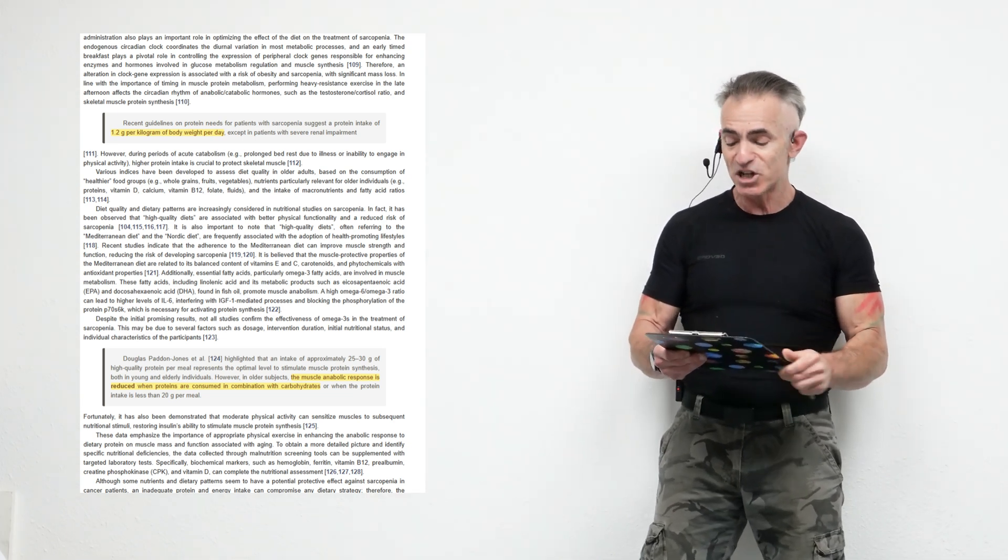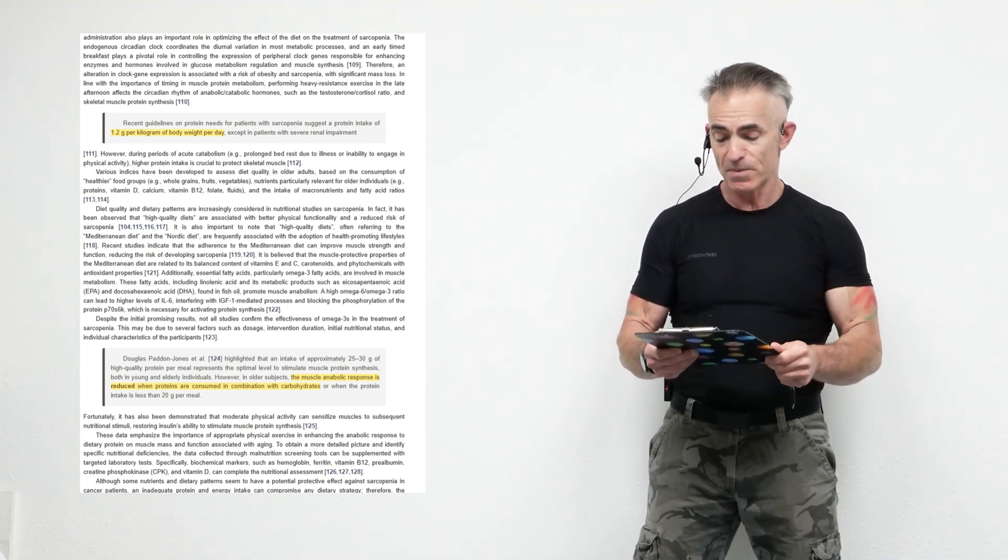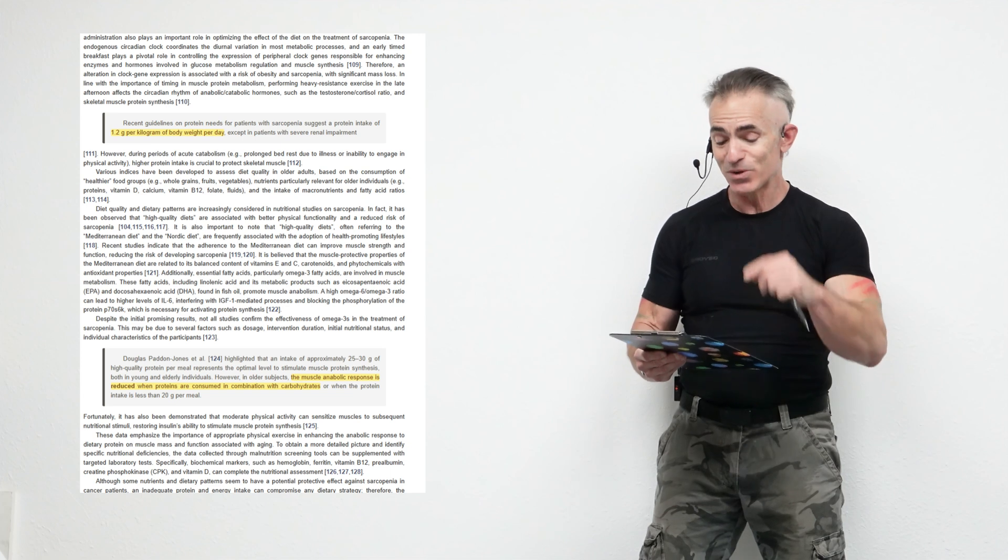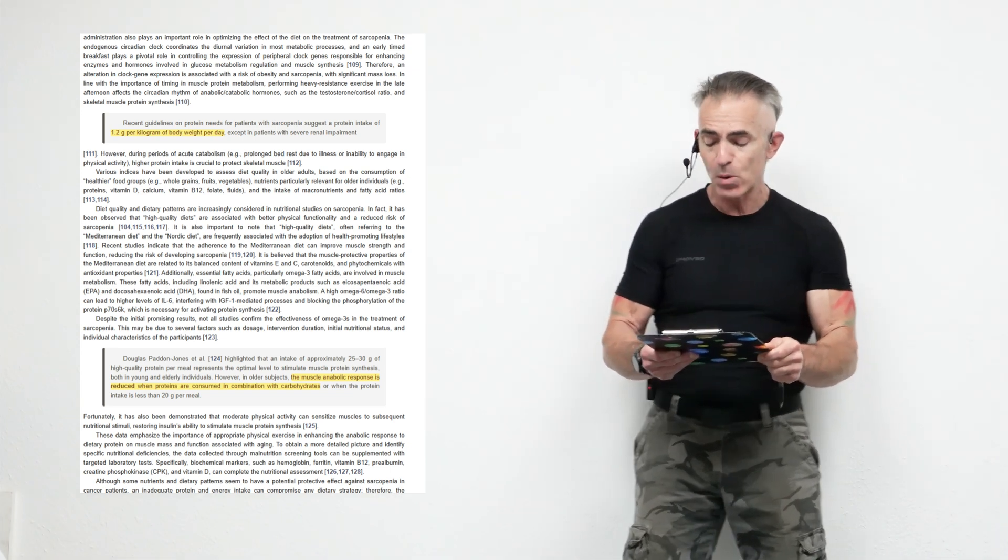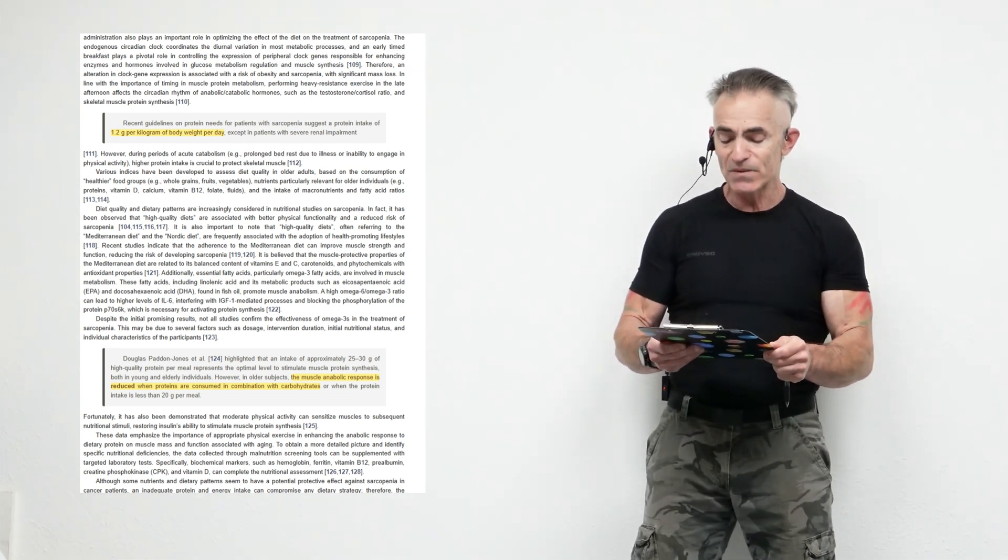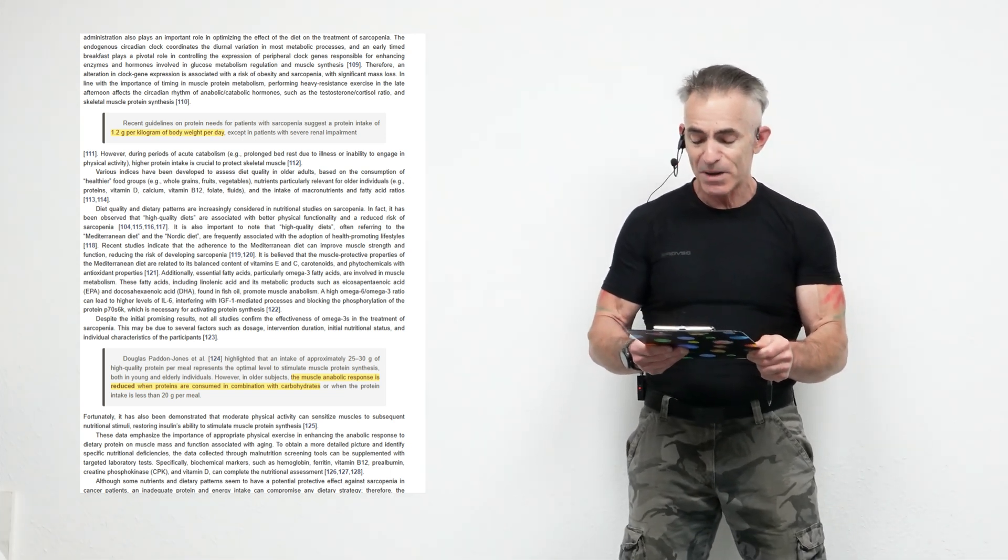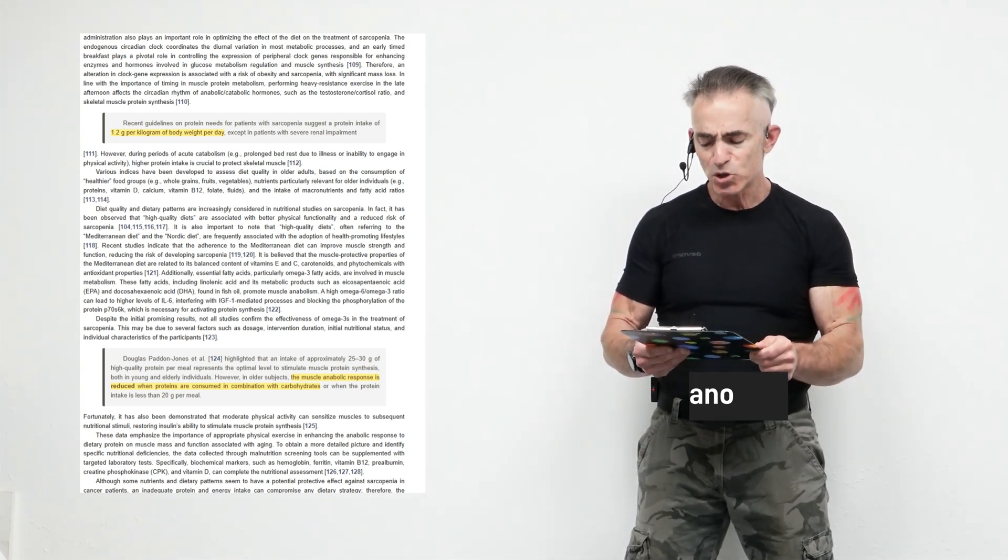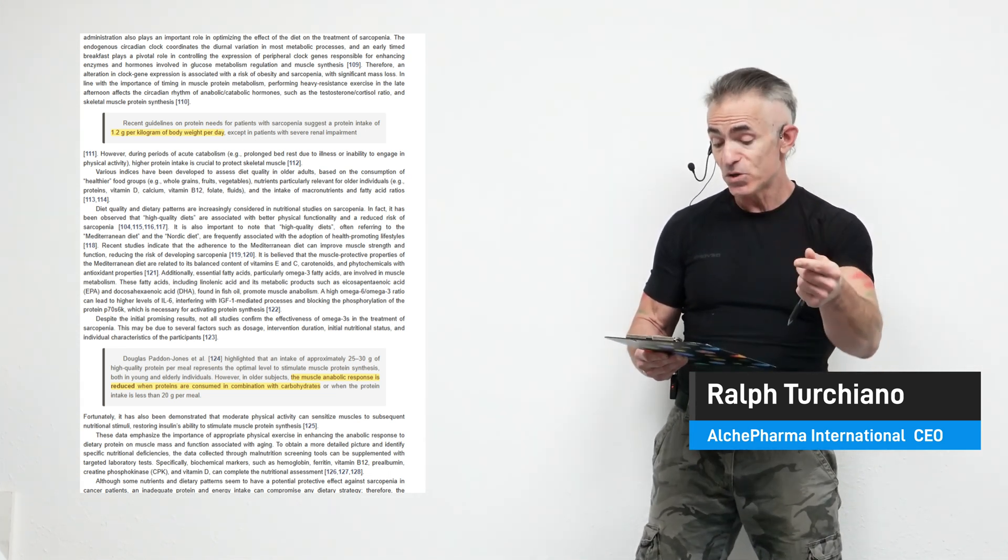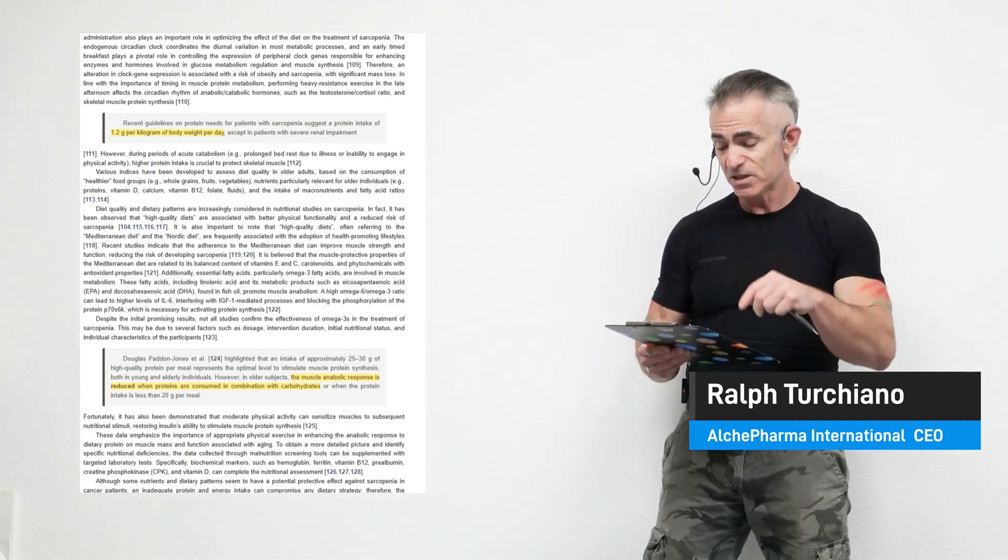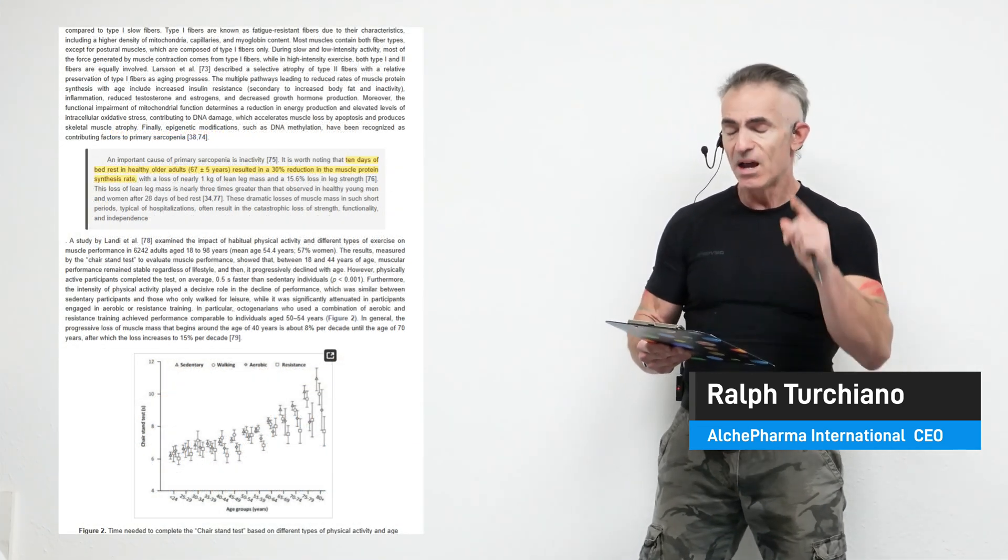Highlight number two: recent guidelines on protein needs for patients with sarcopenia suggest a protein intake of 1.2 grams per kilogram of body weight per day, except in patients with severe renal impairment. Researchers highlighted that an intake of approximately 25 to 30 grams of high-quality protein per meal represents the optimal level to stimulate muscle protein synthesis, both in young and elderly individuals. However, in older adults, the muscle anabolic response is reduced when proteins are consumed in combination with carbohydrates, something I would like to see elucidated in greater detail in the future. So when proteins are consumed in combination with carbohydrates, the anabolic response is reduced. Interesting. Kind of makes you think of the keto diet. Or when protein intake is less than 20 grams per meal.